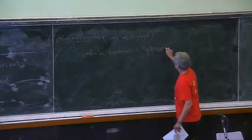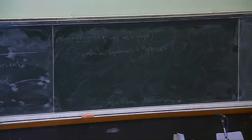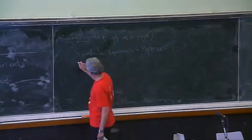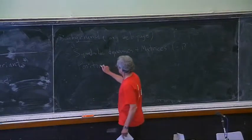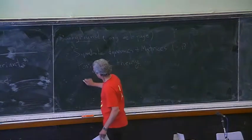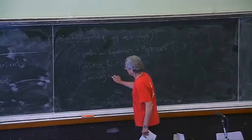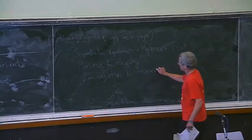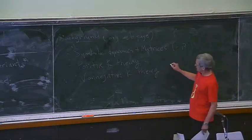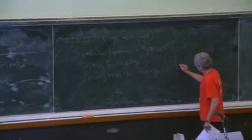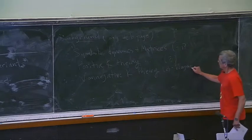That's something short, which you can read for the basic definitions about shifts of finite type and so on. There's also something about positive K-theory and non-negative K-theory. Those are two short papers. The first one is semi-expository by me, and the second is a paper of myself and Jack Wagner.